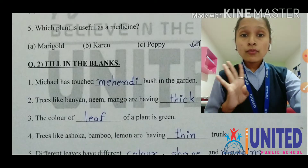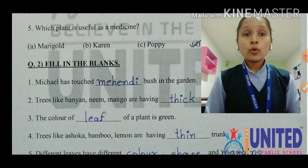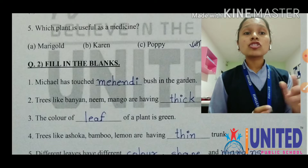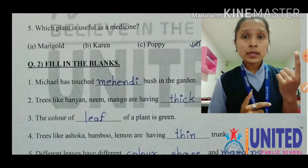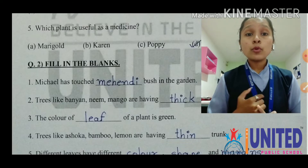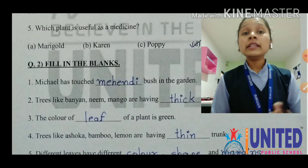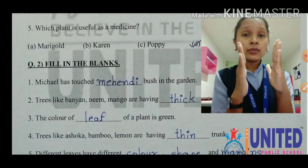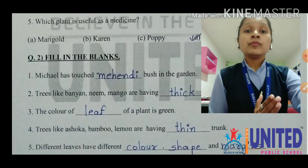Number four: trees like Ashoka, Bamboo, and Lemon are having dash trunk. Ma'am already told you about thick trunk. Now Ashoka, Bamboo, Lemon, and Coconut trees — their trunk is thin, matlab patla. Thin trunk.